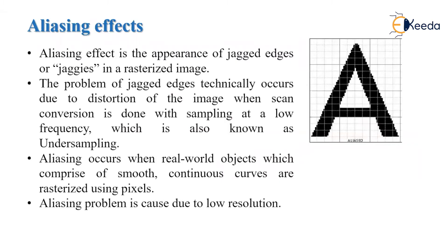Let's see the aliasing effect. The aliasing effect is the appearance of jagged edges or jaggies in a rasterized image. Jaggies means a line with a stair-step appearance. As we see this figure of the letter A, there is a stair-step appearance in the image. The problem of jagged edges technically occurs due to distortion of the image when scan conversion is done with sampling at low frequency, also known as undersampling. Whenever the resolution of the image is low, this aliasing effect is more noticeable.